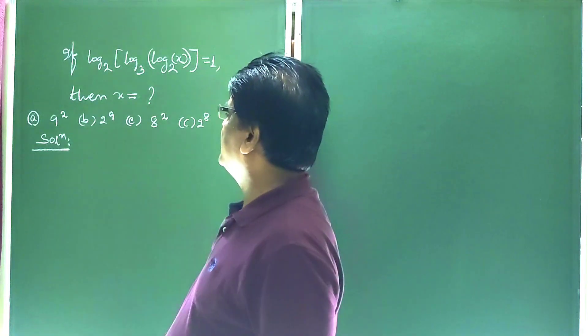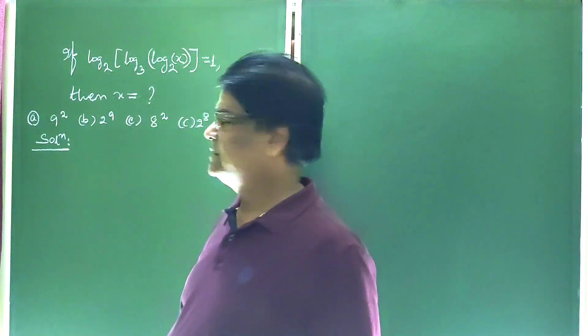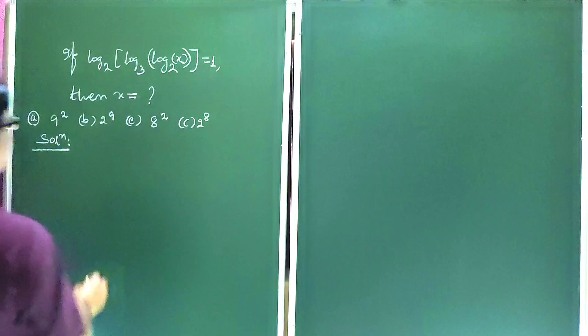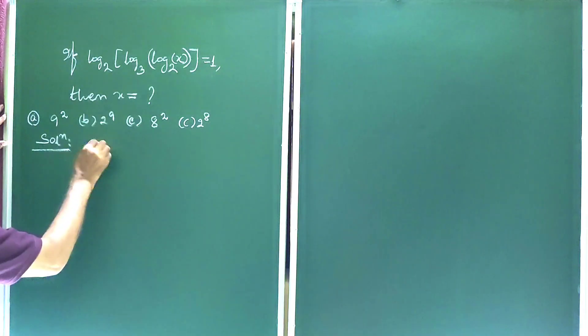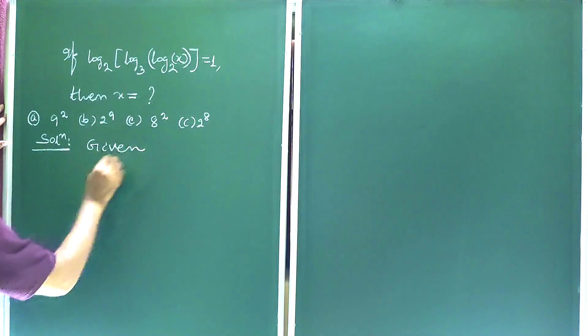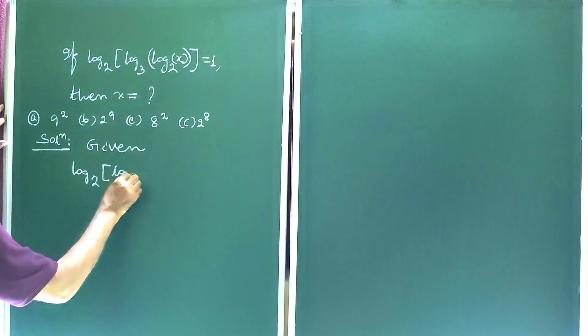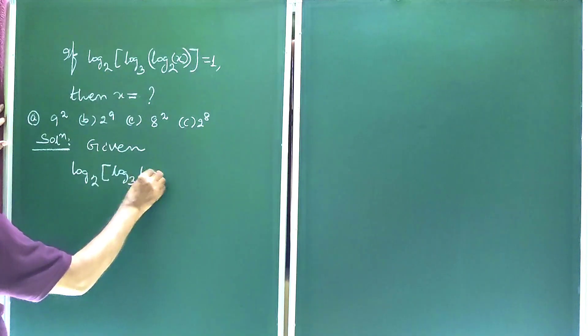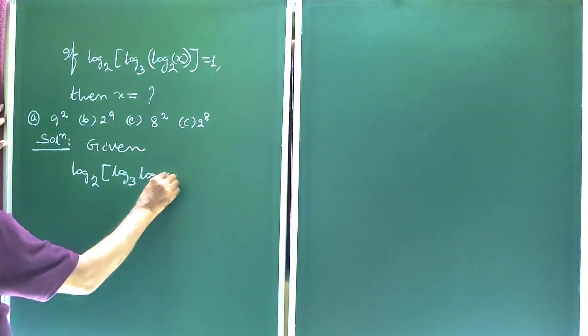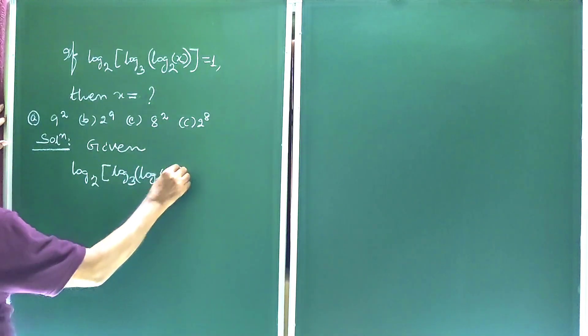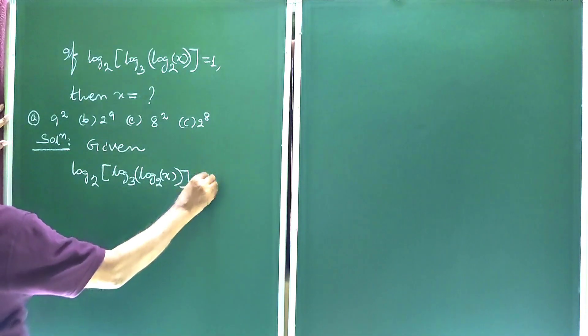The choices are given and we have to find the correct answer. Now solution: given log base 2 of log base 3 of log base 2 of x is equal to 1.